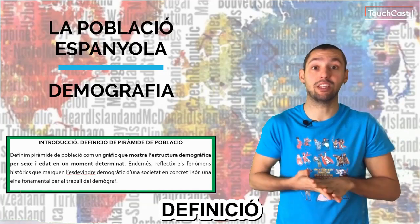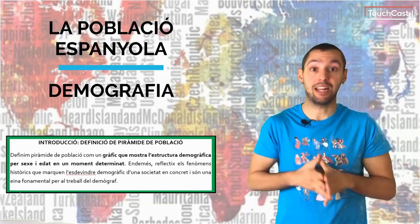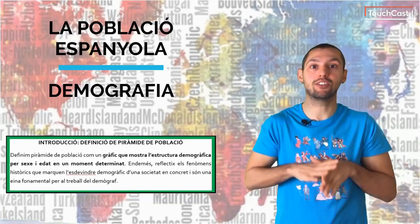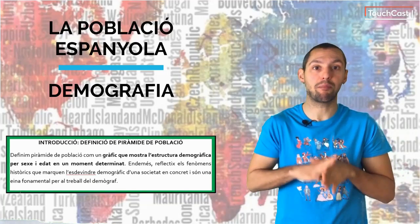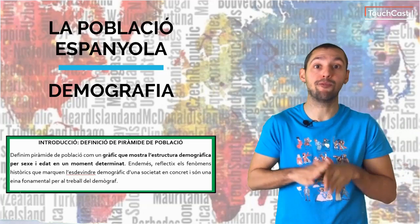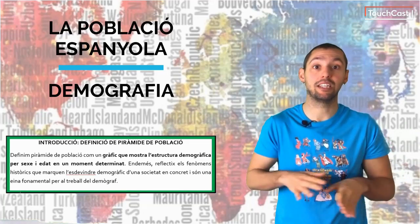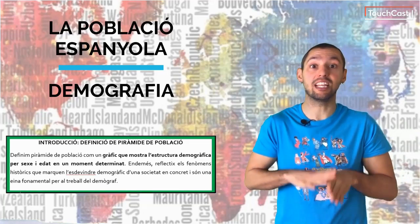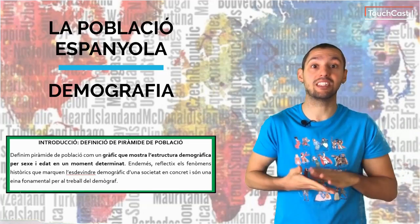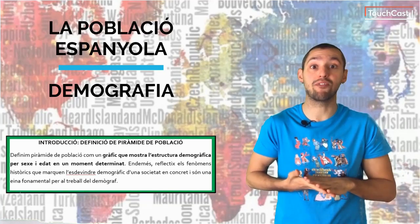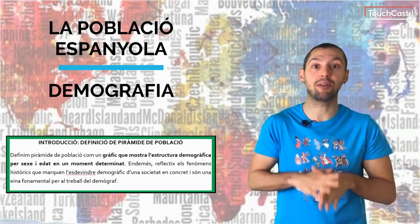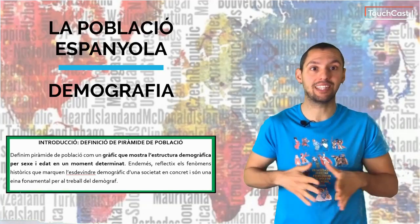D'entre les possibilitats que n'hi ha, nosaltres proposem la següent: la piràmide de població és un gràfic que mostra l'estructura demogràfica per sexe i edat en un moment determinat. A més, reflecteix els fenòmens històrics que marquen el devenir demogràfic d'una societat en concret, i és una eina fonamental per al treball del demògraf.